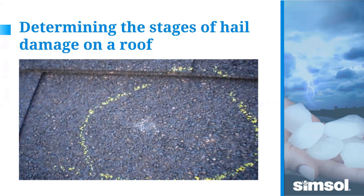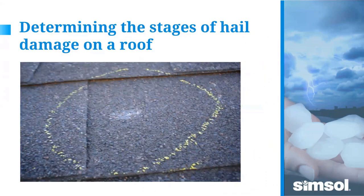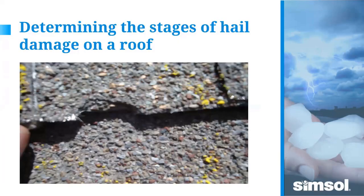Hail hits should be fairly evenly distributed over the roof slopes that were exposed to the hail. They shouldn't cluster close to a valley or near a second-story window. It's not uncommon to see hail strikes on one side of the house and none on the other due to wind direction, but you shouldn't see a concentrated arc of strikes within three feet of a valley and nowhere else on the roof — that's an indication of manufactured hail damage.